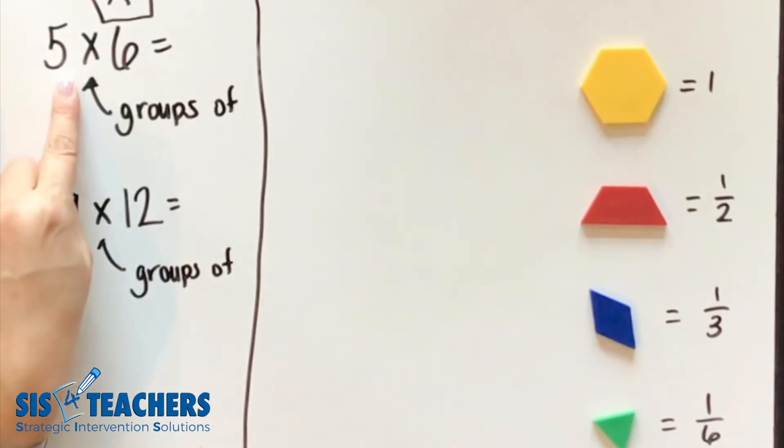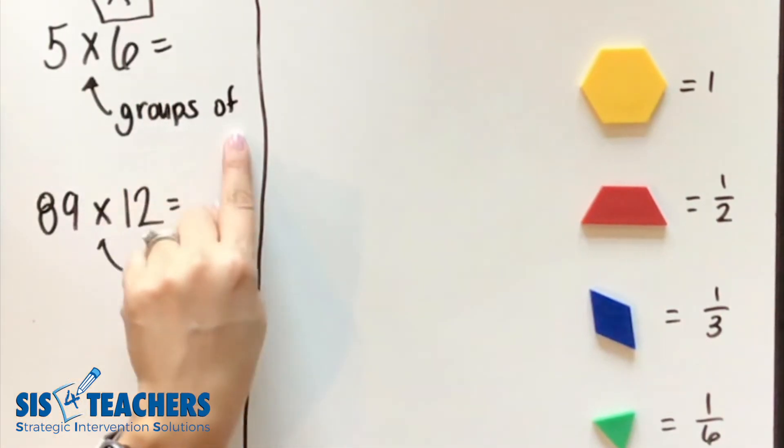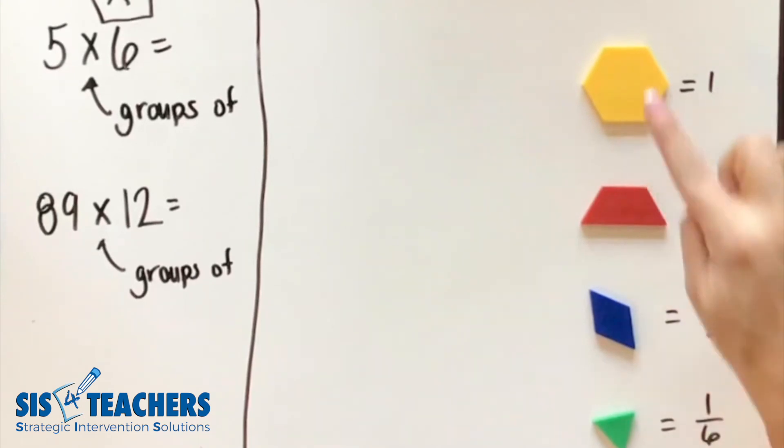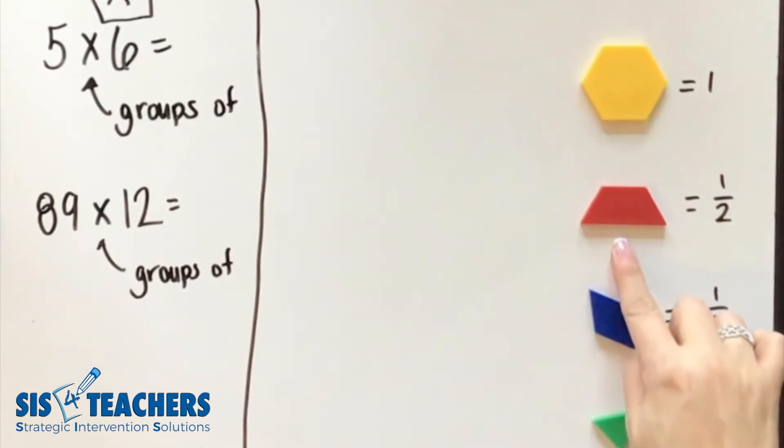To review, when we ask what five times six means, you know that it means five groups of six. Eighty-nine times twelve really means 89 groups of twelve. Over here, we have the fraction manipulatives you've been using, which are our pattern blocks. The hexagon equals one whole, our trapezoid equals one half, the rhombus is one third, and the triangle equals one sixth.